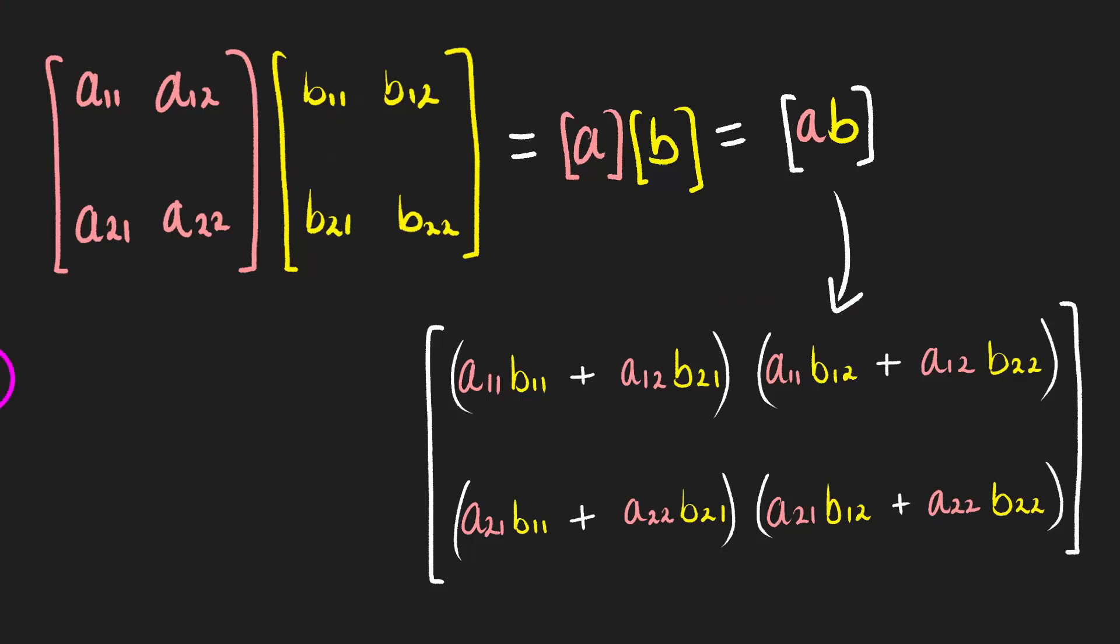So for instance, the first element of the combined matrix is made up of A11 times B11 plus A12 times B21.